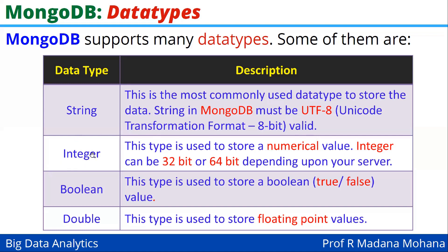The next data type is integer. This is the type used to store a numerical value. Integer can be 32-bit or 64-bit depending upon our server.